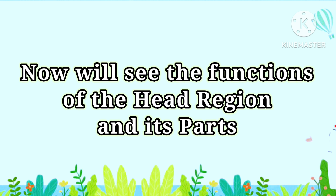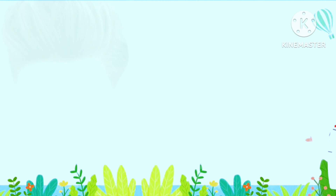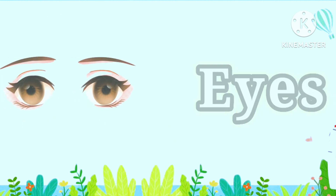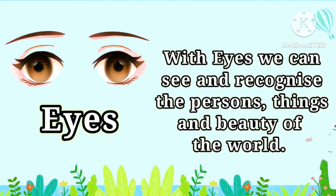Now we will see the functions of the head region and its parts. Hair: hair protects the head region and gives shape to our faces. Eyes: with eyes, we can see and recognize persons, things, and the beauty of the world.